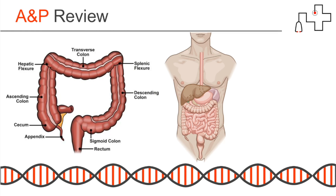The appendix is a small sac-like outcropping of the colon with no known function. It can become infected with retained fecal matter — bacteria build up in that sac-like structure and cause inflammation. This can cause the appendix to become enlarged, causing severe right lower quadrant pain, often with severe nausea, vomiting, and fever. If it ruptures, it creates serious risk for infection and sepsis. It's a common procedure to get an appendectomy and have the appendix removed, and you can live perfectly fine without it.